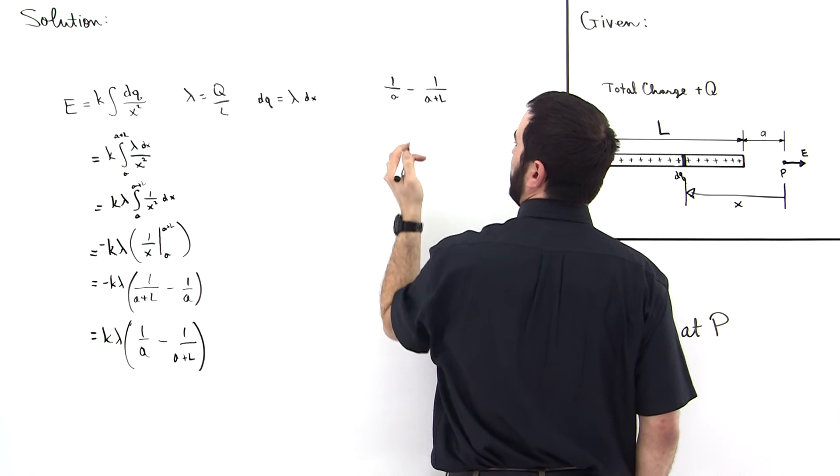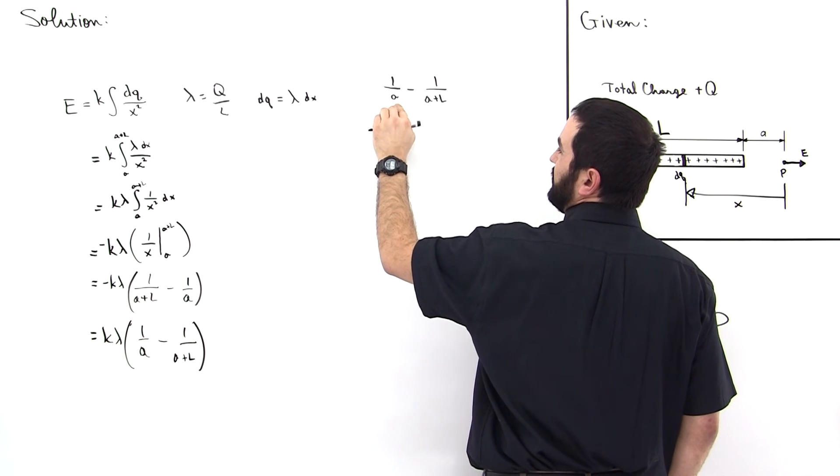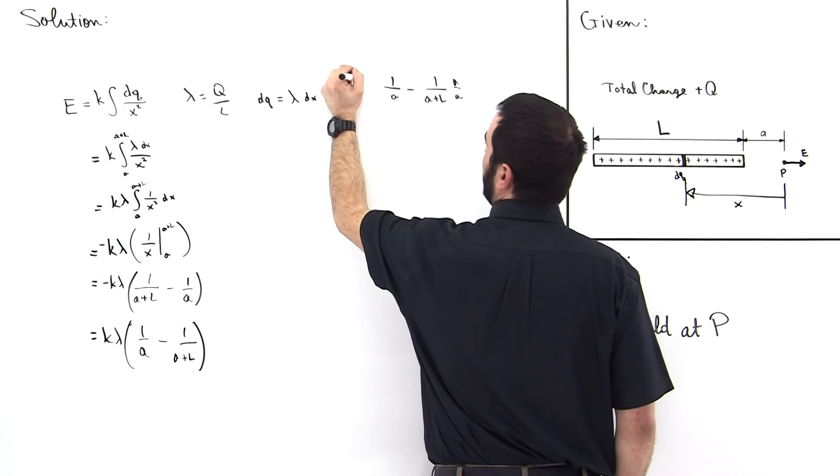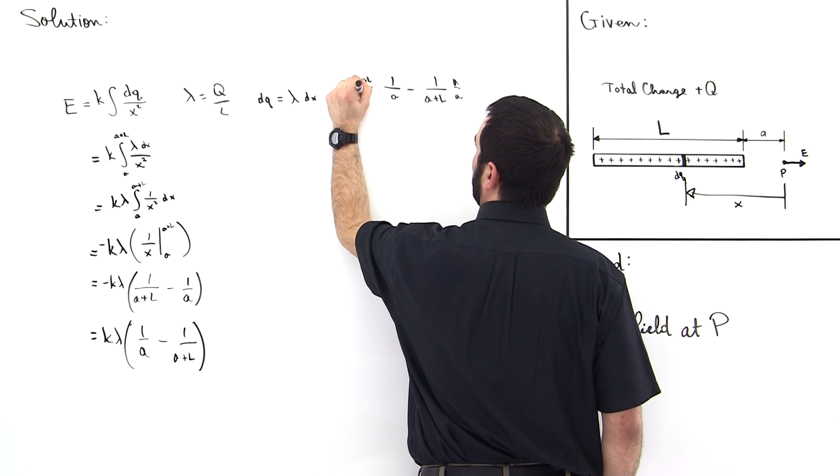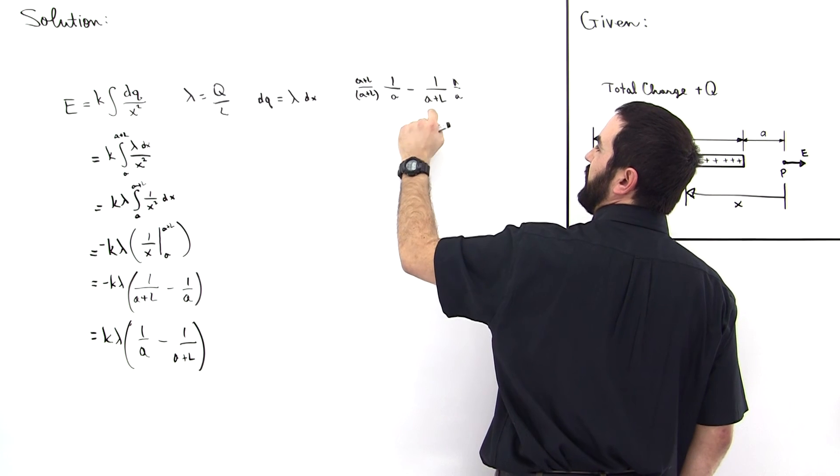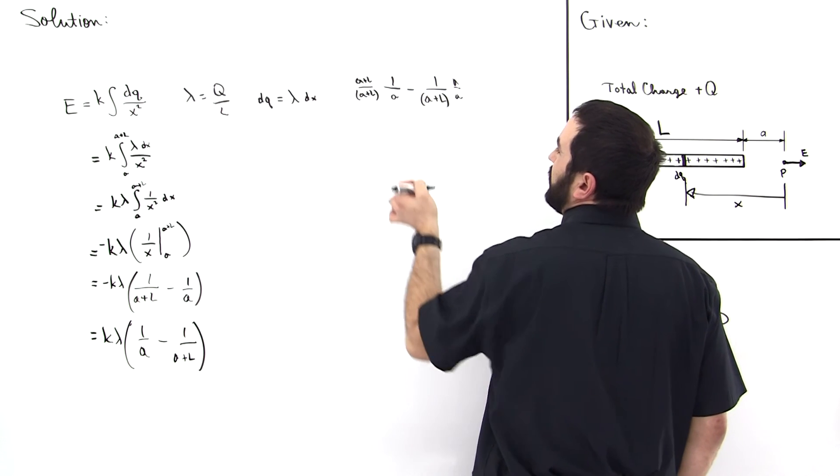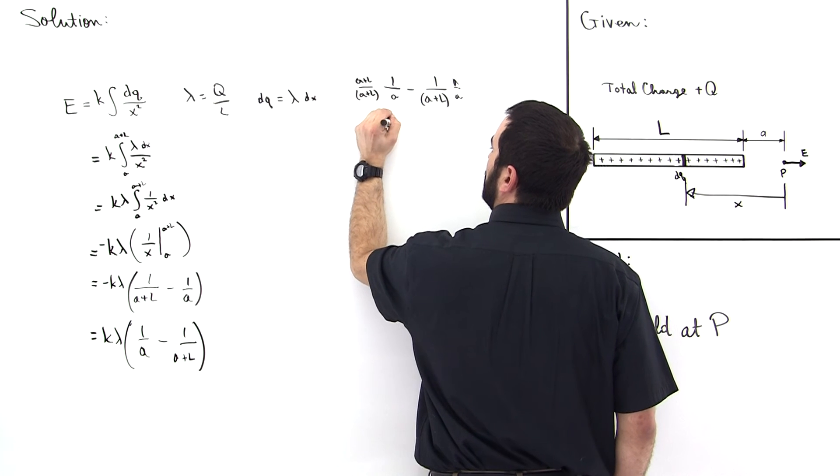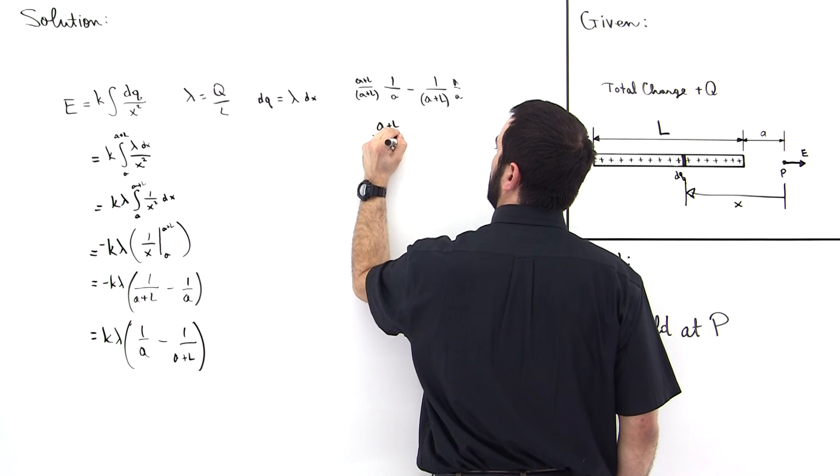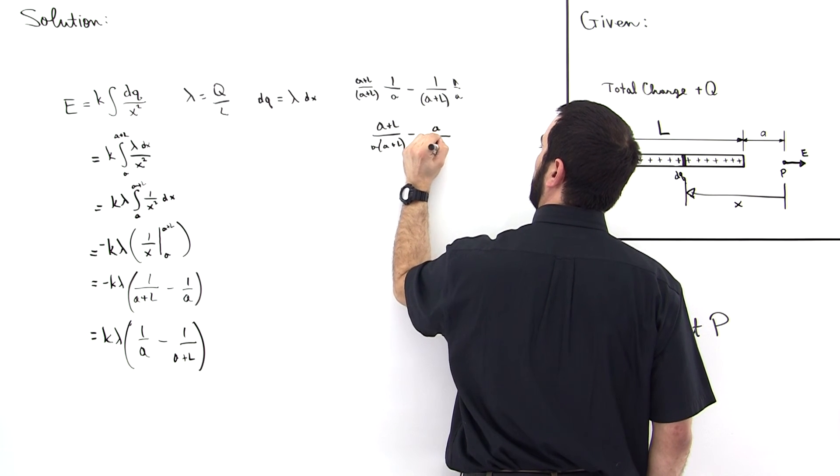If you remember, to find the least common denominator is going to be A times A plus L, because you just take the denominator of this guy and multiply this one over here times A over A. And then take the denominator of this guy and multiply this side over A plus L over A plus L. Notice you've got A plus L times A on the bottom here and A plus L times A on the bottom over here. So now you can actually perform the operation. Then you have A plus L over A times A plus L minus A over A times A plus L.